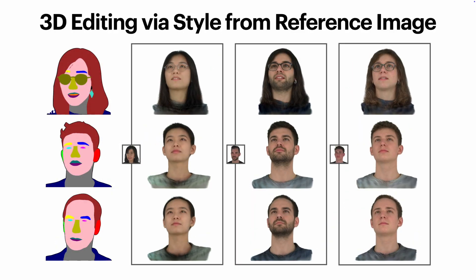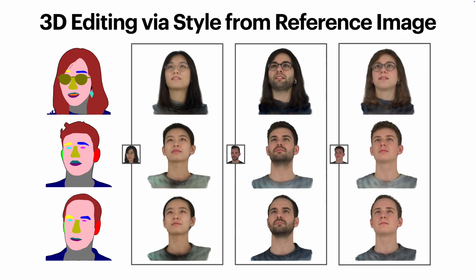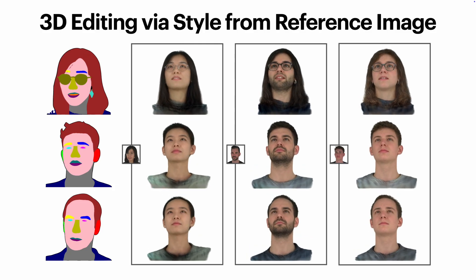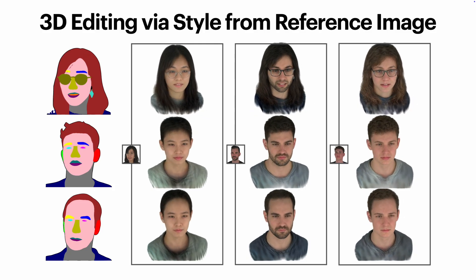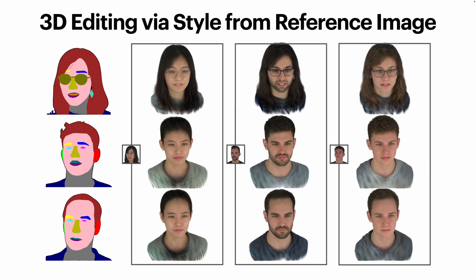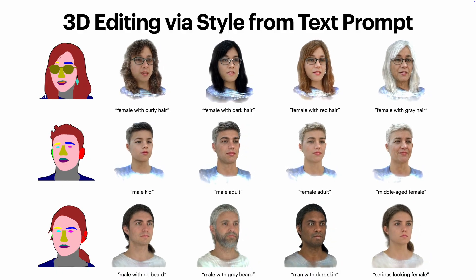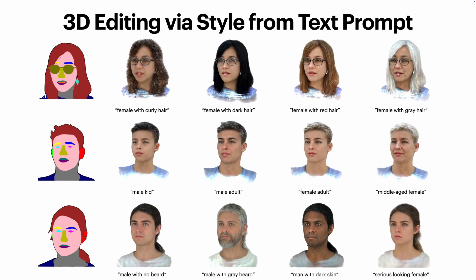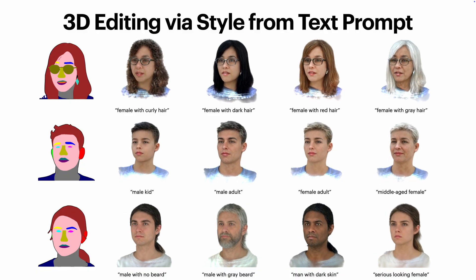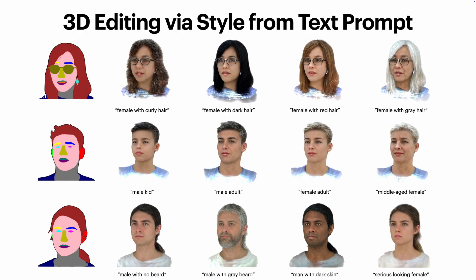Our approach also enables 3D editing. In this example, we control geometry using segmentation maps and specify style using a reference image. The model adapts both seamlessly into photorealistic, stylized 3D heads. Our model also supports text-guided style editing, even though we do not explicitly train for it. This is made possible by CLIP's powerful vision-aligned text encoder, enabling edits from low-level style cues like hair texture to high-level attributes such as age.